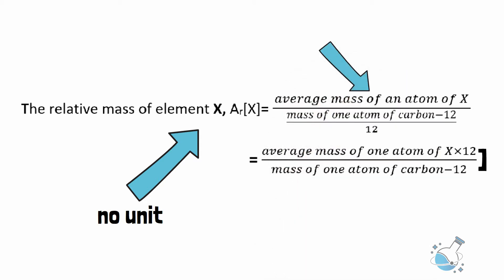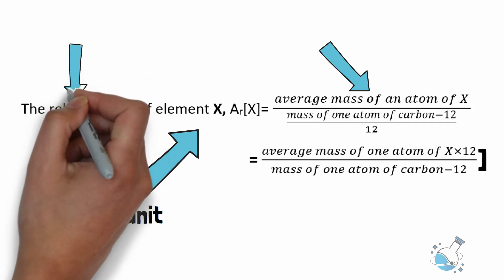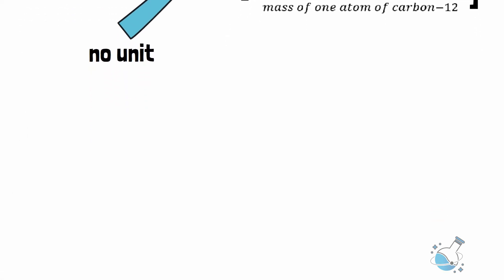You can also see that in the case of an element, the average of all the isotopes is used. Their relative abundance is also considered.